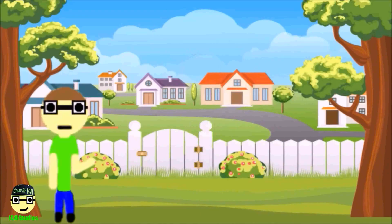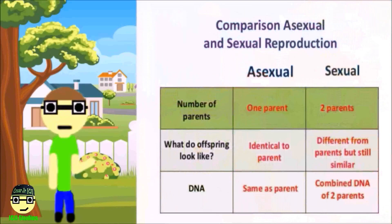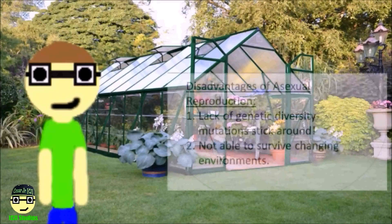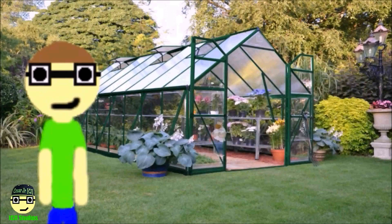Unlike sexual reproduction, asexual reproduction does not require a mate. Reproducing organisms asexually takes less time than reproducing sexually. As for the disadvantages of asexual reproduction, it's a lack of genetic variation. Its genetic variation means only a few individuals can survive in the environment.